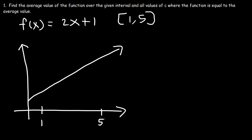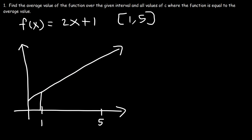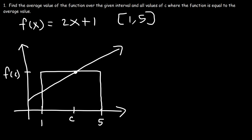According to the mean value theorem, the area under the curve — basically the shaded area — is equal to the area of the rectangle at some value c. The average value is f of c, and it occurs when the area of the rectangle equals the area under the curve.